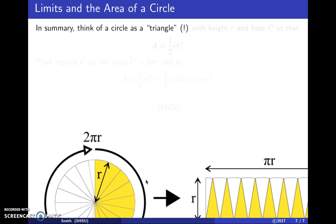In summary, think of the circle as a triangle, in this bizarre way, or lots of little triangles, with height r and base C, so the area is one-half the height times the base. Replace C by 2πr, and presto,